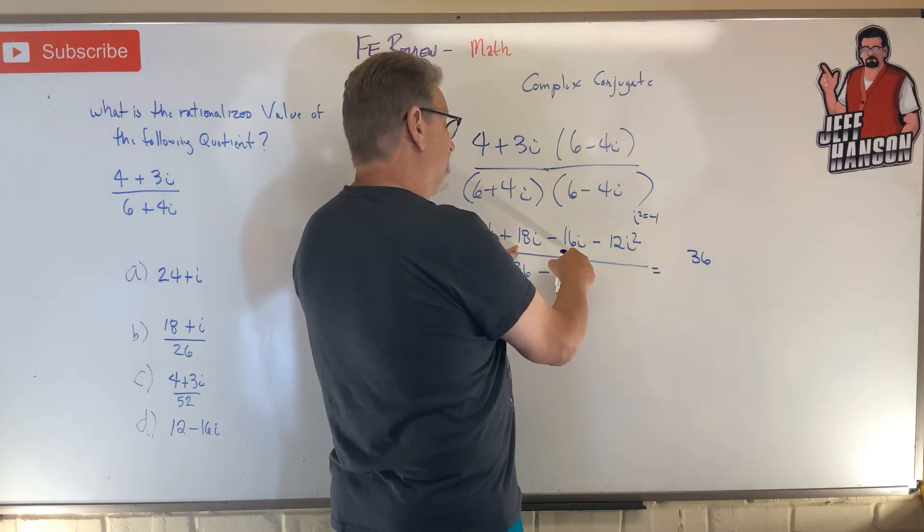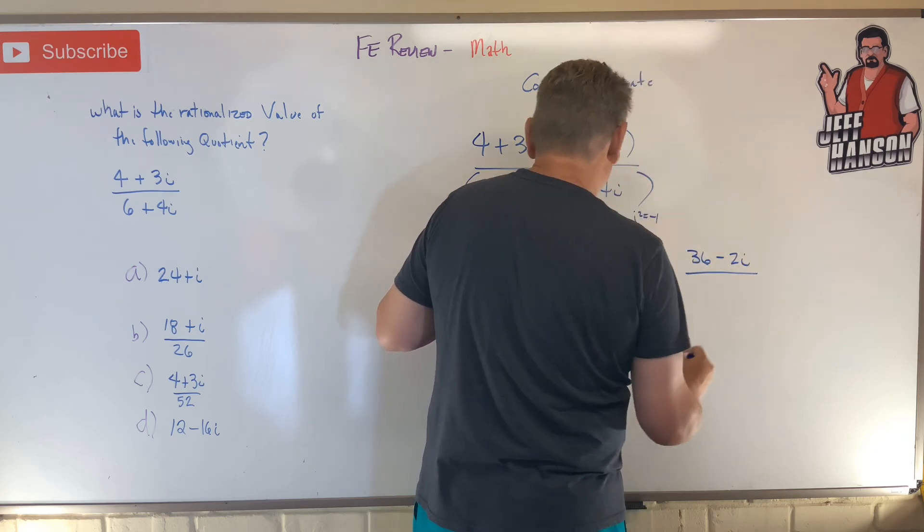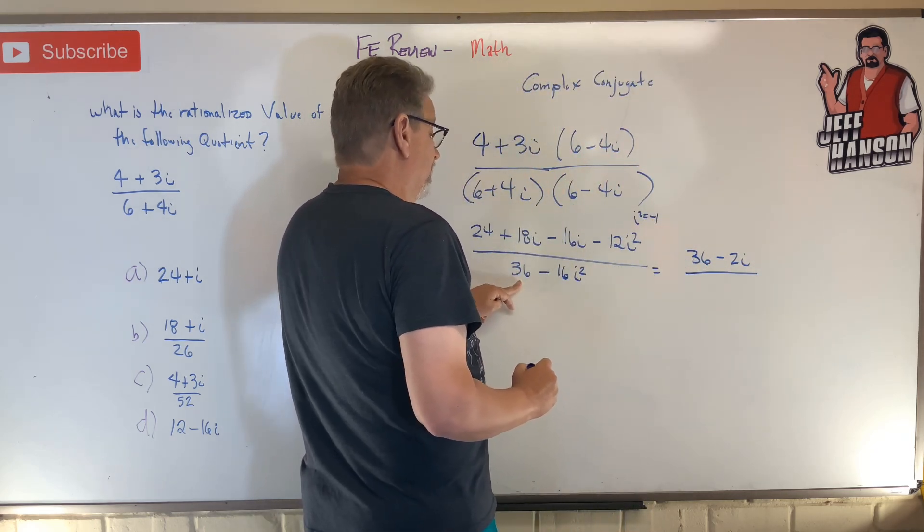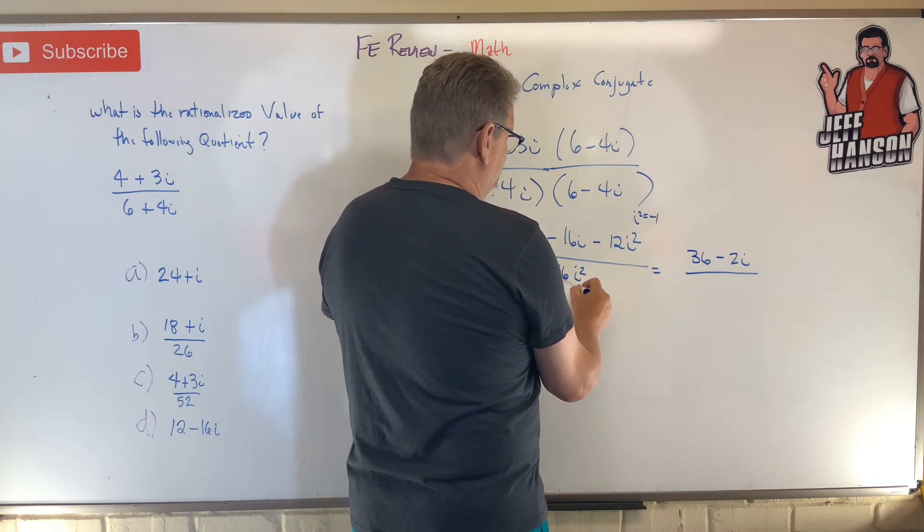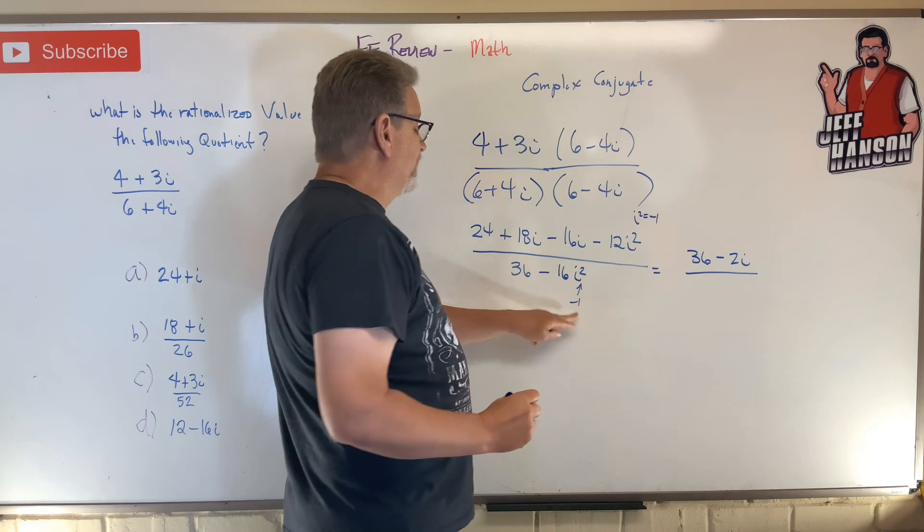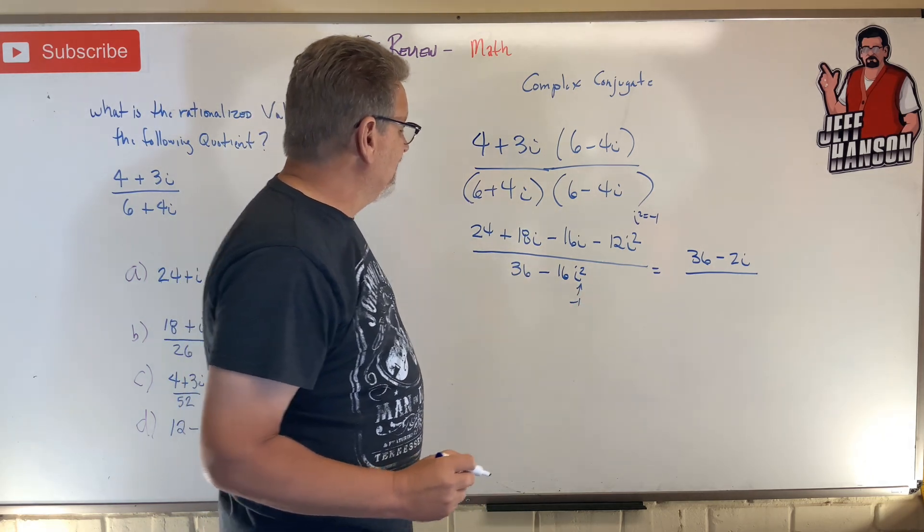36, and then one of the i's, minus 18 minus 16 is minus 2i, divided by what do we got down here? Okay, 36. Minus, remember this, this here is minus one, so that whole thing is going to become positive 16.